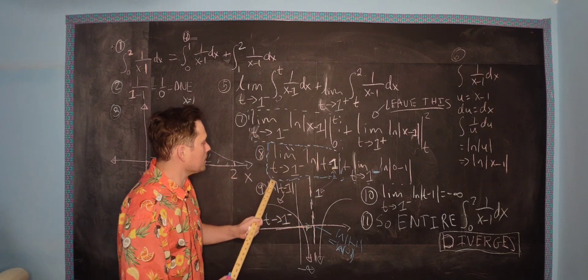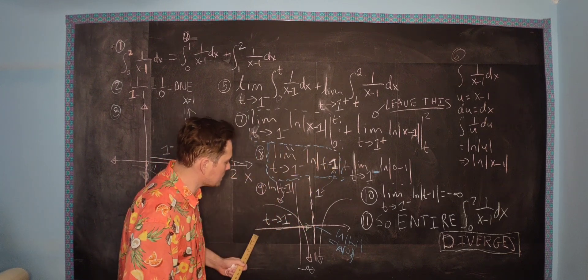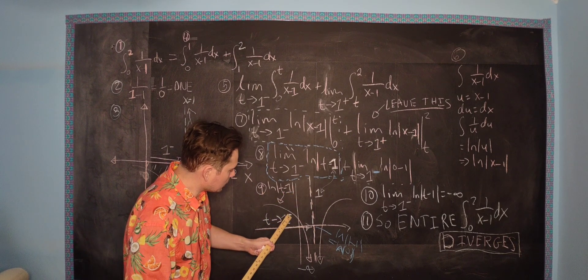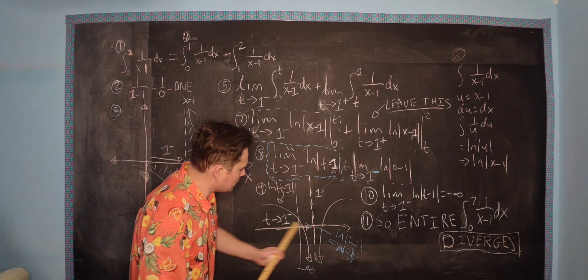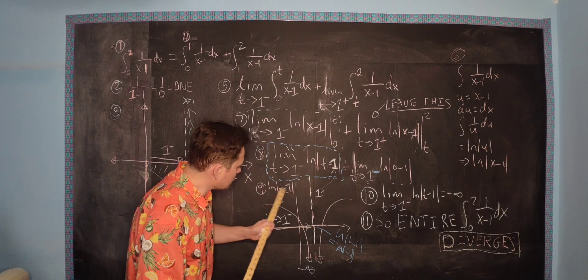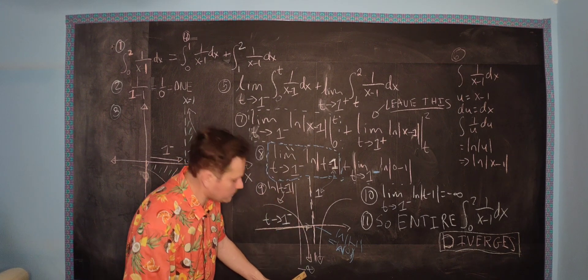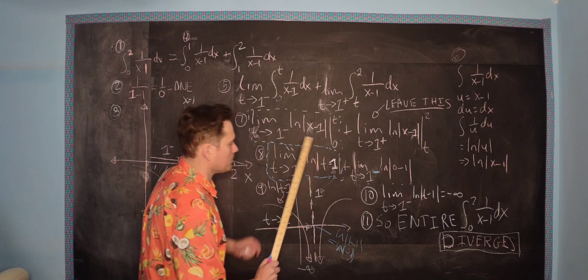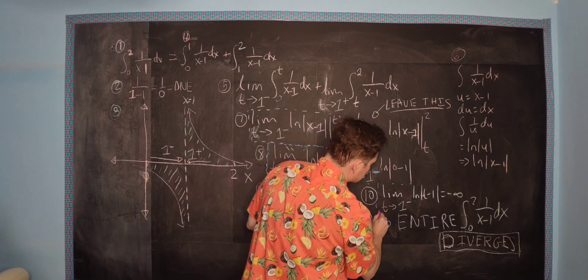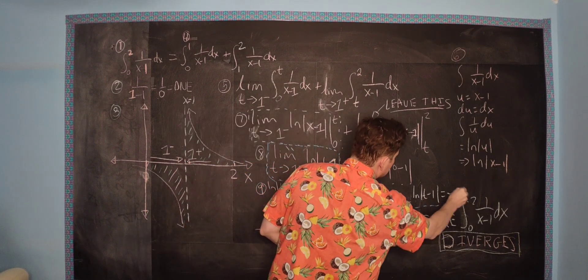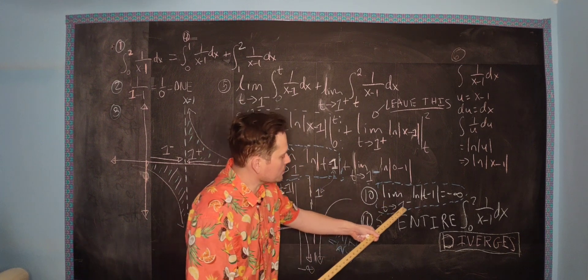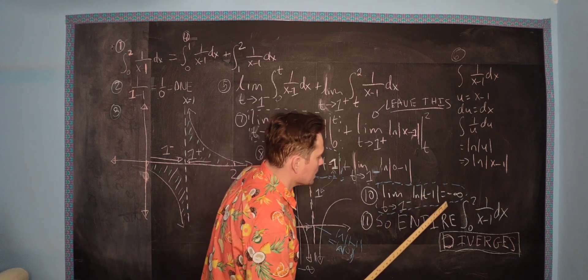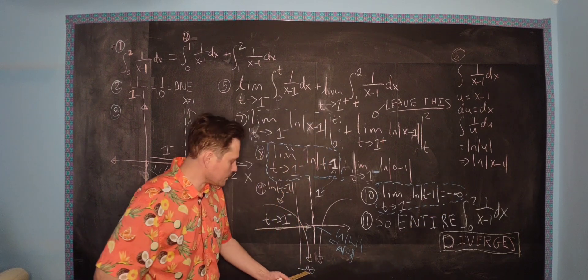Now look what happens. Just this limit alone, this part in the blue box, the limit as t approaches 1 from the left side of this function. t is approaching 1 from the left side, coming this way, and the values of ln of t minus 1 in absolute value go down towards negative infinity. So this part in blue, the limit as t approaches 1 from the left side of ln of t minus 1, is negative infinity.